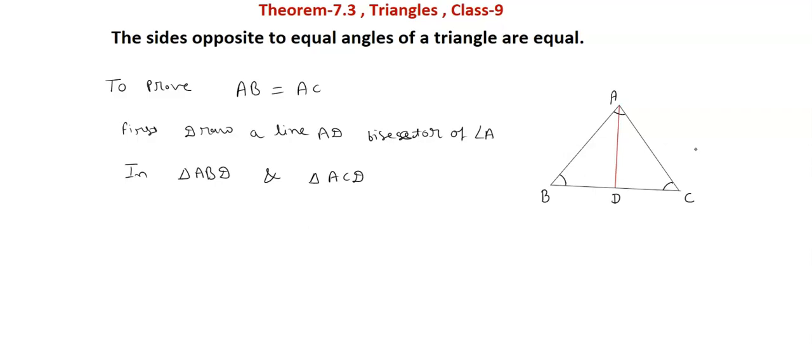Now what are equal here? First, given angle ABD is equal to angle ACD, given in the theorem. Second, AD side is equal to AD side, common in both triangles. AD is present in triangle ABD and also in triangle ACD. Third, AD is bisector of angle A, so we get here angle BAD is equal to angle CAD, because AD line is bisector of angle A.